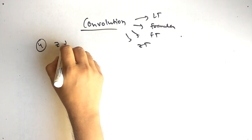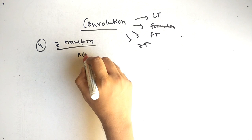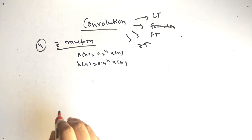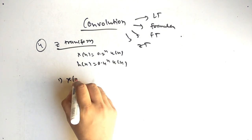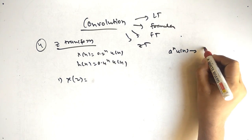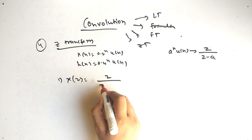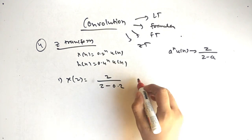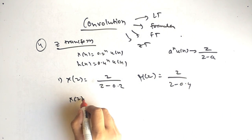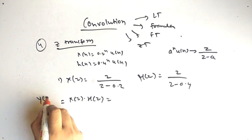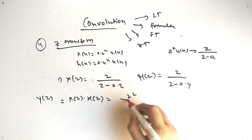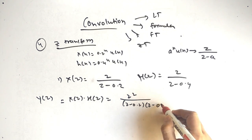Our fourth method is the Z-transform. The question is: x of n equals 0.2 raised to n times u of n, and h of n equals 0.4 raised to n times u of n. The formula here is: a raised to n times u of n transforms to z by z minus a. So X of z equals z by z minus 0.2, and H of z equals z by z minus 0.4. Multiplying both gives Y of z equals z squared over z minus 0.2 times z minus 0.4.